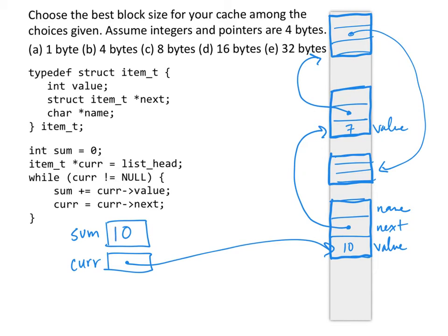Now we get to the actual question that's being asked: what is the best block size for the cache? So since in all of these cases we're grabbing data sizes that are four bytes, so the value and the next are four bytes each,